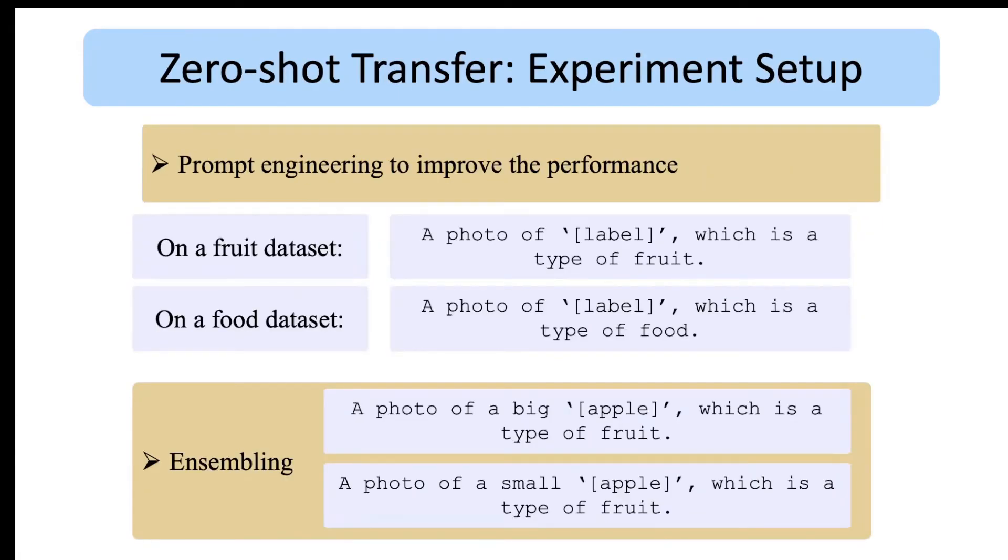While the initial experiments using only class names for pairing showed promising results, the authors also used prompt engineering techniques to further improve the results. Instead of simply using the class names for the text, we can wrap them into a more descriptive text phrase like these examples that can be tuned for each dataset. For example, on a dataset of fruits, we can build text phrases like 'a photo of apple which is a type of fruit' or 'a photo of orange which is a type of fruit' and try to match each image with one of these possible text phrases.